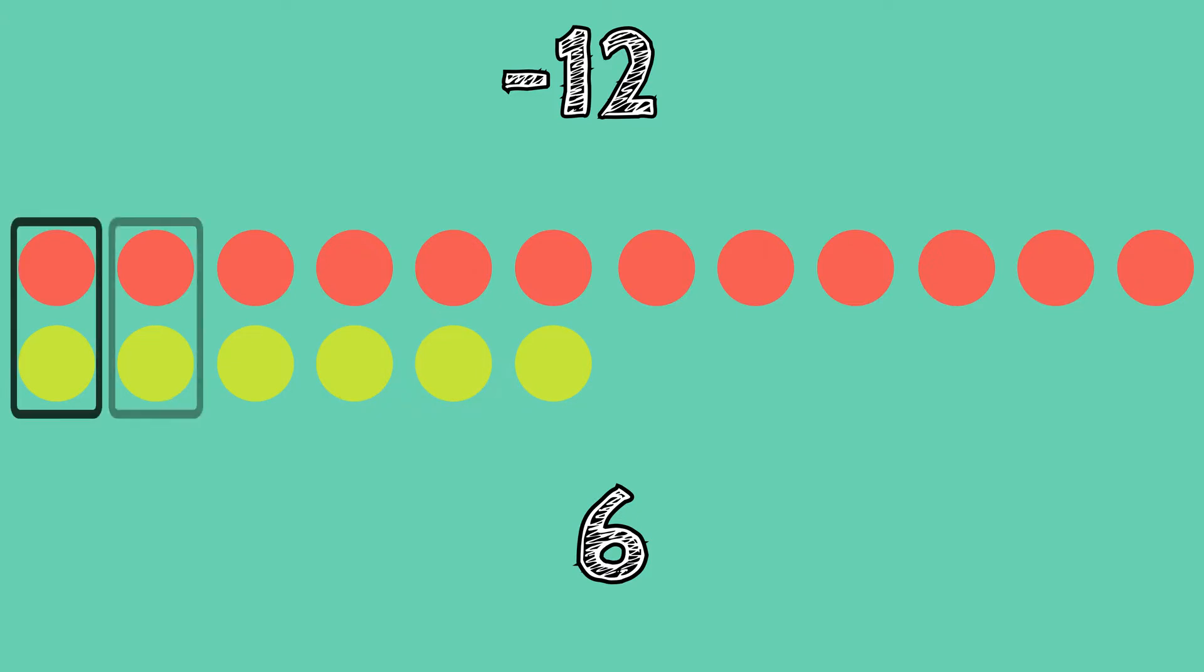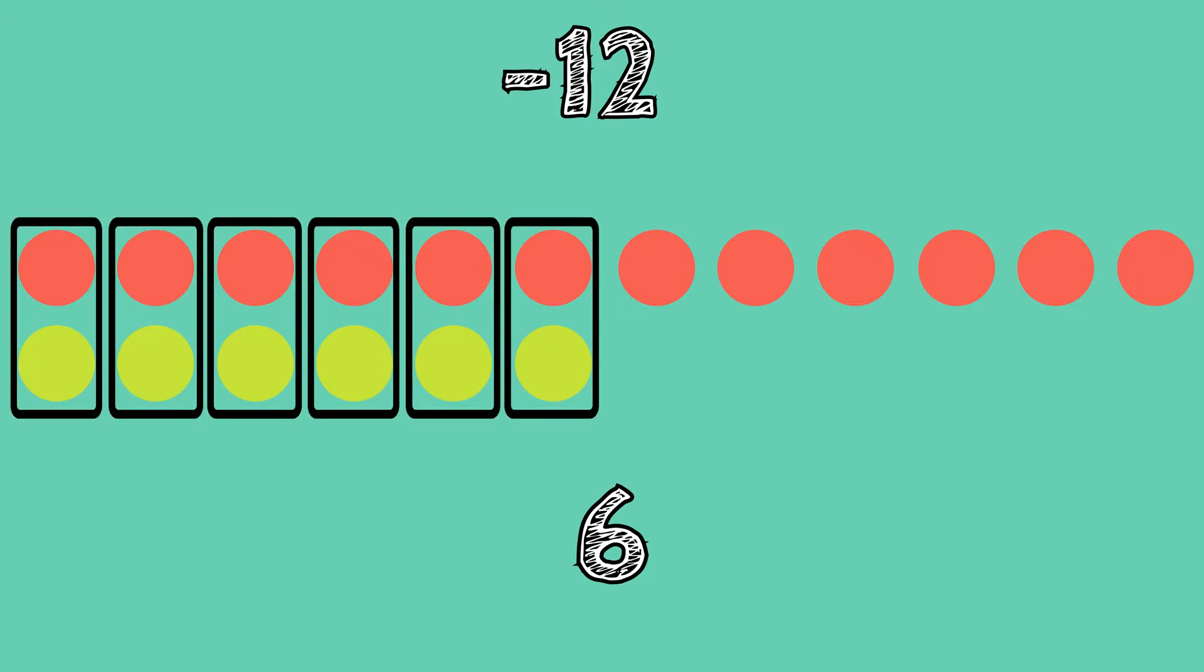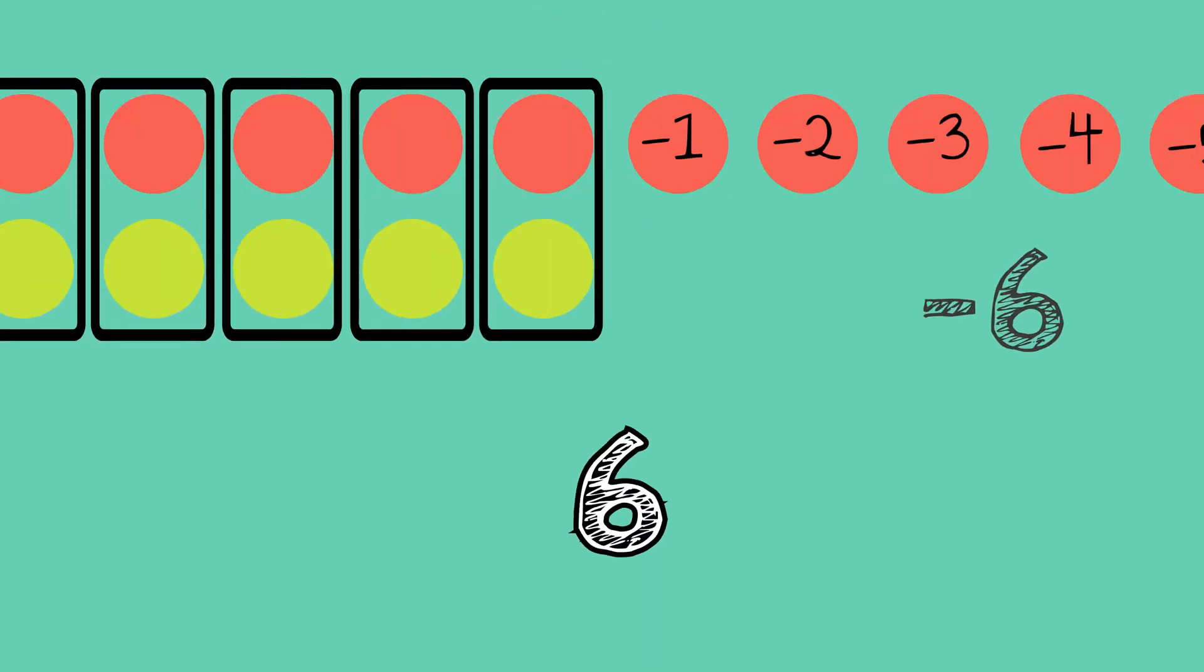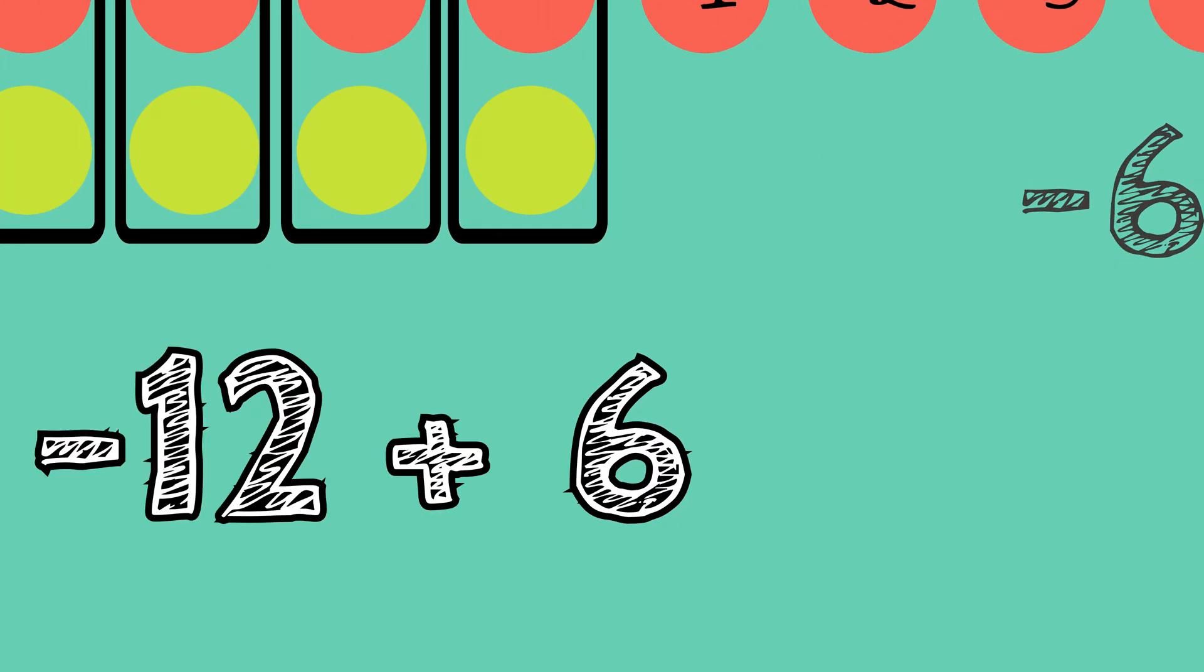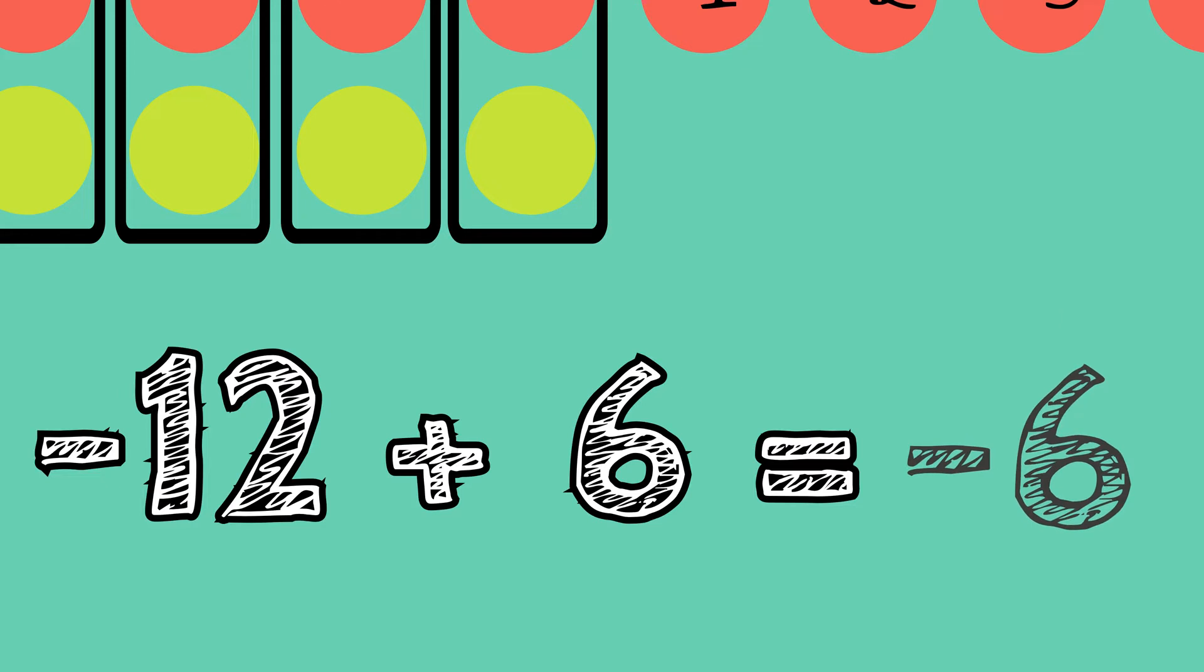We can use 12 red counters to represent negative 12 and 6 yellow counters to represent positive 6. As we pair up every negative with a positive to form zero pairs, we're left with 6 red counters or 6 negative units. Our final answer is negative 6. Negative 12 plus positive 6 is equal to negative 6.